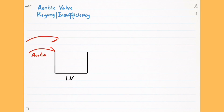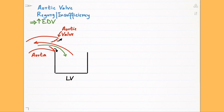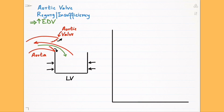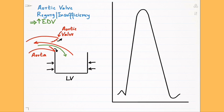Aortic regurgitation or insufficiency works differently. We have a loose aortic valve which can't close properly, so it allows backflow of blood into the left ventricle during diastole, resulting in increased end-diastolic volume. To pump out this increased amount of blood, the left ventricle has to contract strongly as per Starling's law. This increased force of contraction results in very high left ventricular systolic pressure, which is much higher than the normal 120 millimeters of mercury. In aortic regurgitation, the left ventricle can pump the maximum amount of blood, so its pressure is transmitted into the aorta and the aortic pressure curve closely follows the left ventricular curve.